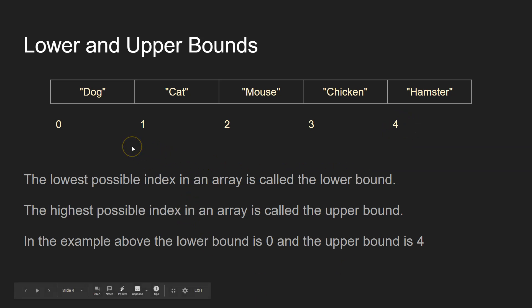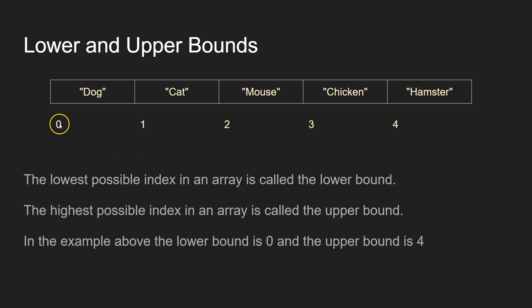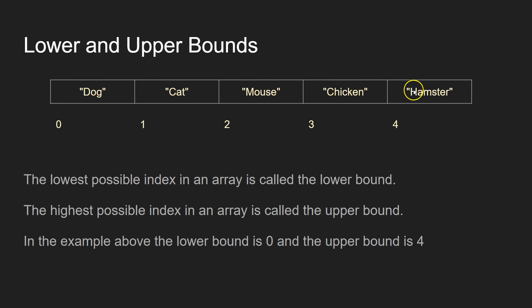If it was a different language and they started indexing at one, then you just move it along one. So the lowest possible bound here would be one and the highest possible bound would be five. But Python and most languages start at zero. And if you had a language where indexing started at four, ten, or two hundred, all you do is count your way along looking at how many possible items there are, and therefore you can calculate the upper bound.